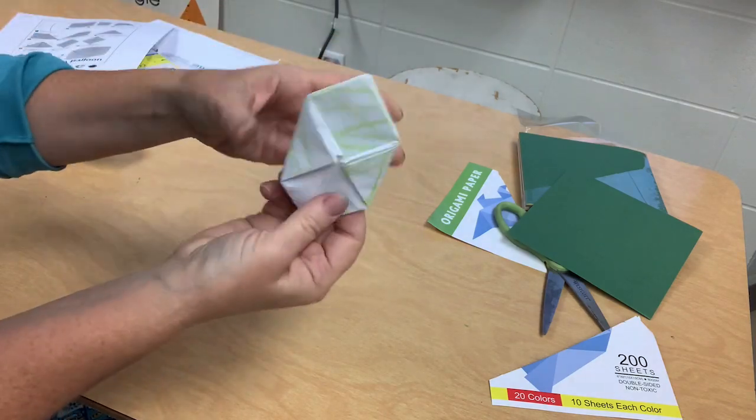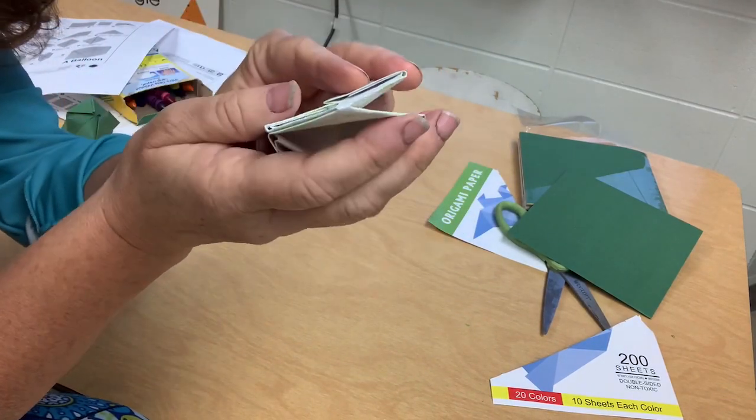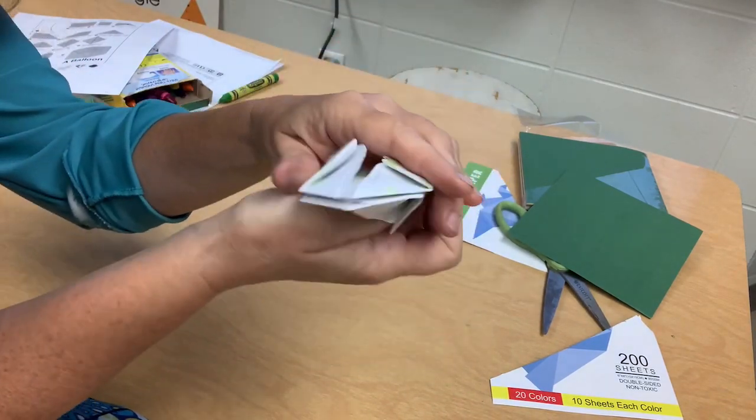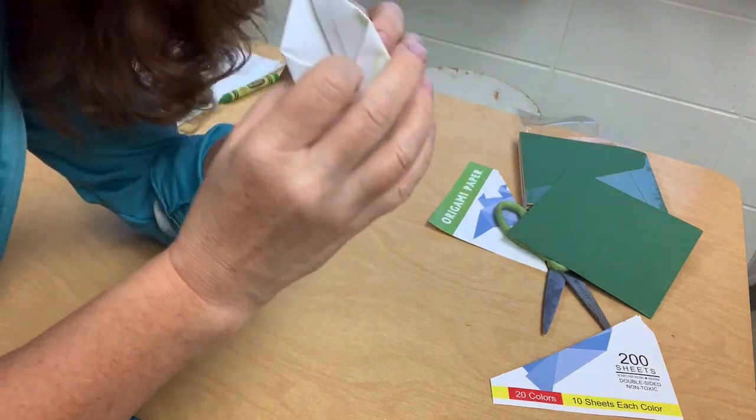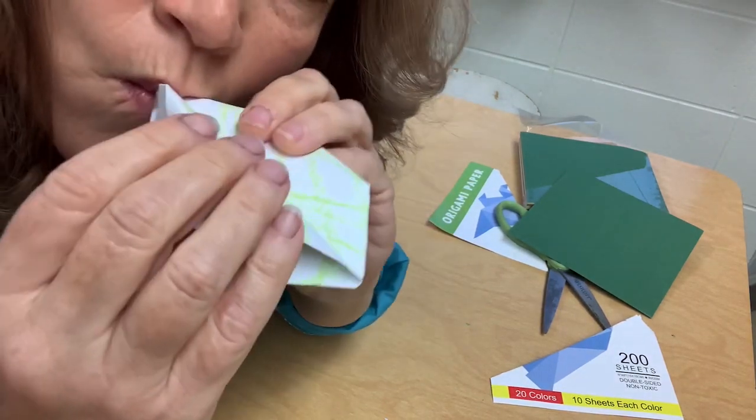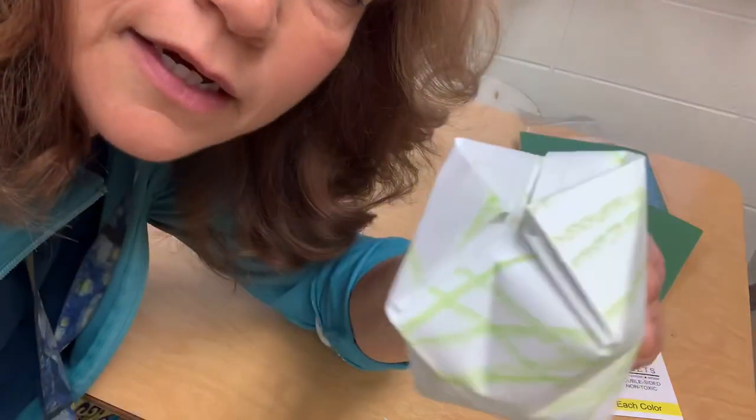So you've done that to all four sides. Now you're ready to blow up the balloon. There's this end which is closed. What you want is this open end with the hole in it. You just take it like this and blow. And there's your balloon.